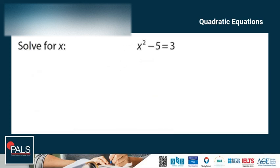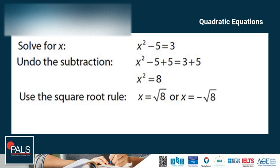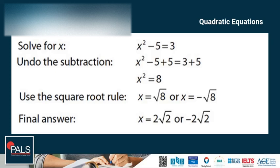Another example: x squared minus 5 is equal to 3. The first thing we need to do is undo the subtraction by adding 5 to both sides. Negative 5 plus 5 is 0 and 3 plus 5 is 8, so we have x squared is equal to 8. Using the square root rule, x is equal to the square root of 8 or x is equal to negative the square root of 8. The final answer is x is equal to 2 times the square root of 2 or negative 2 times the square root of 2.